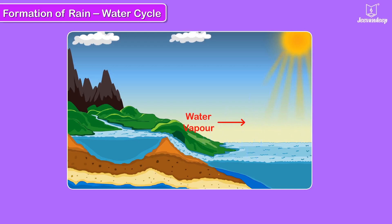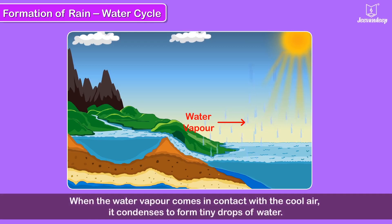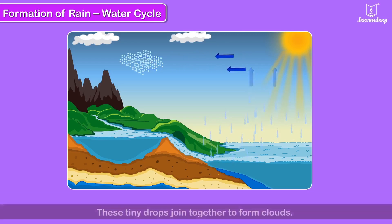This water vapor rises up. When this water vapor comes in contact with the cool air high up or a mountain, it condenses to form tiny drops of water. These tiny drops join together to form clouds.